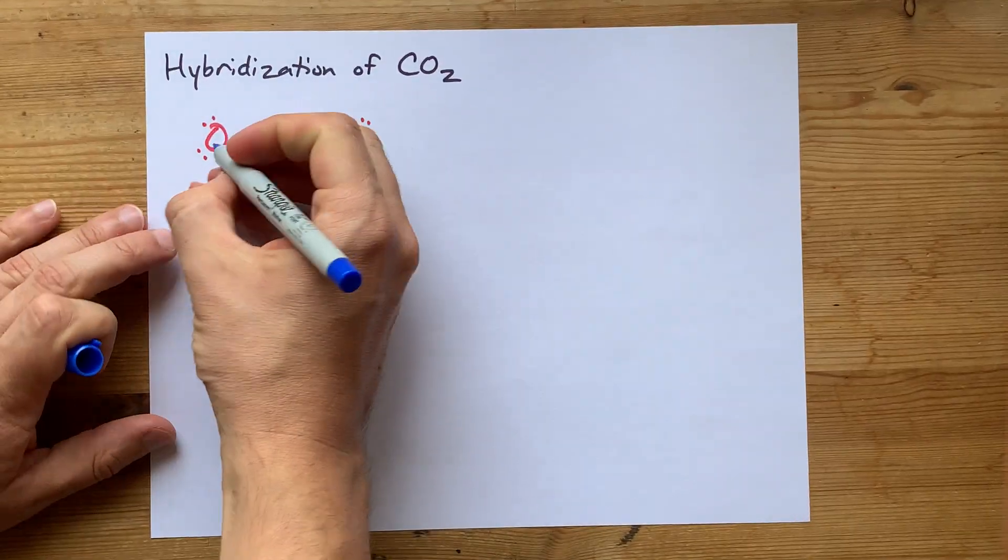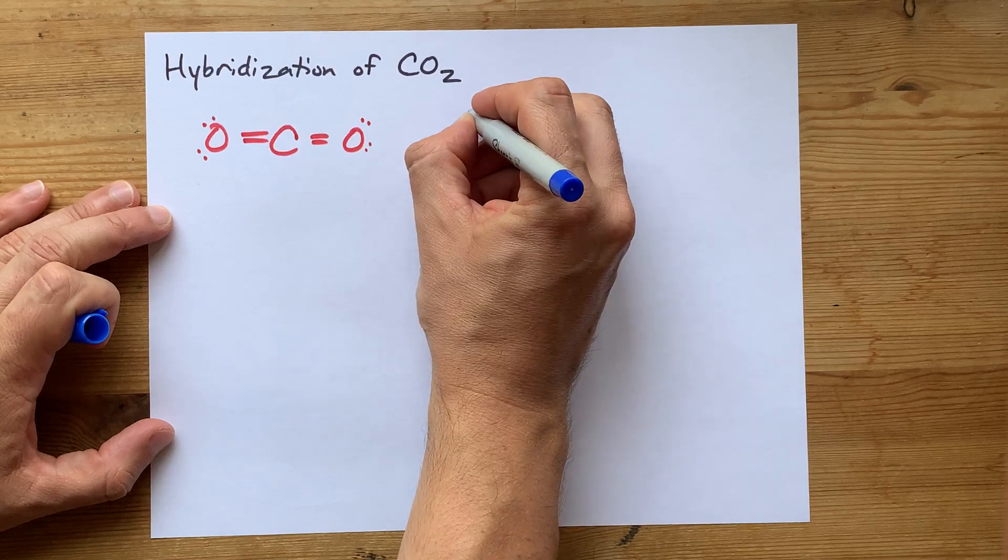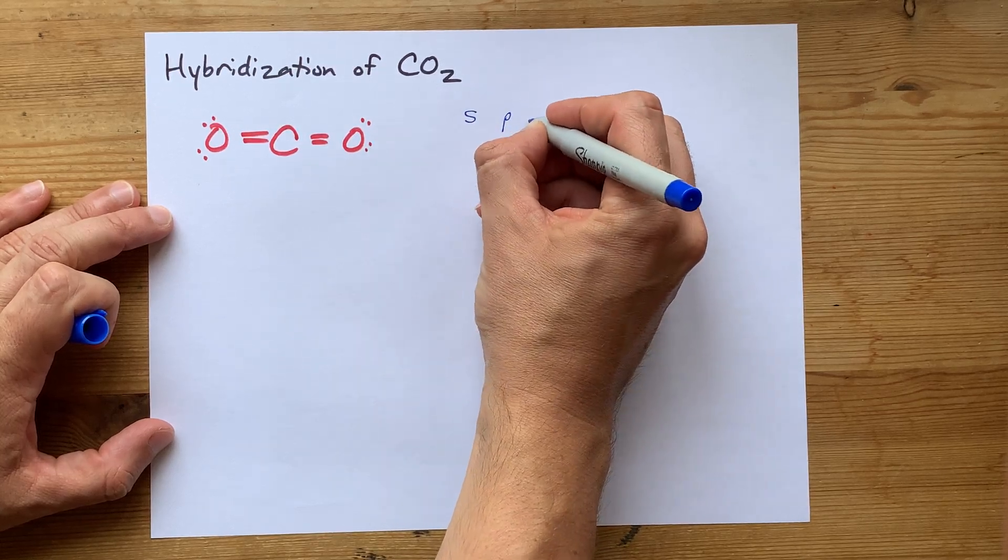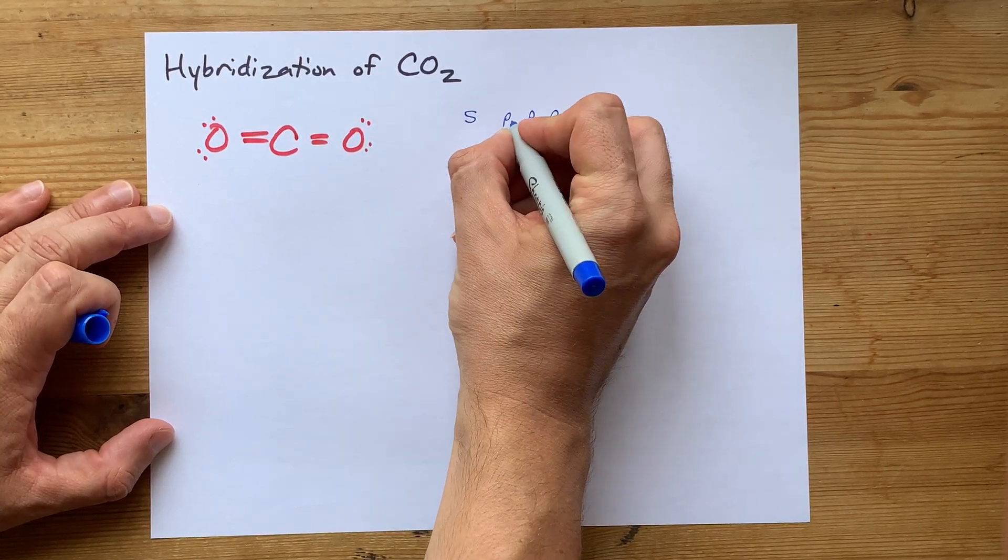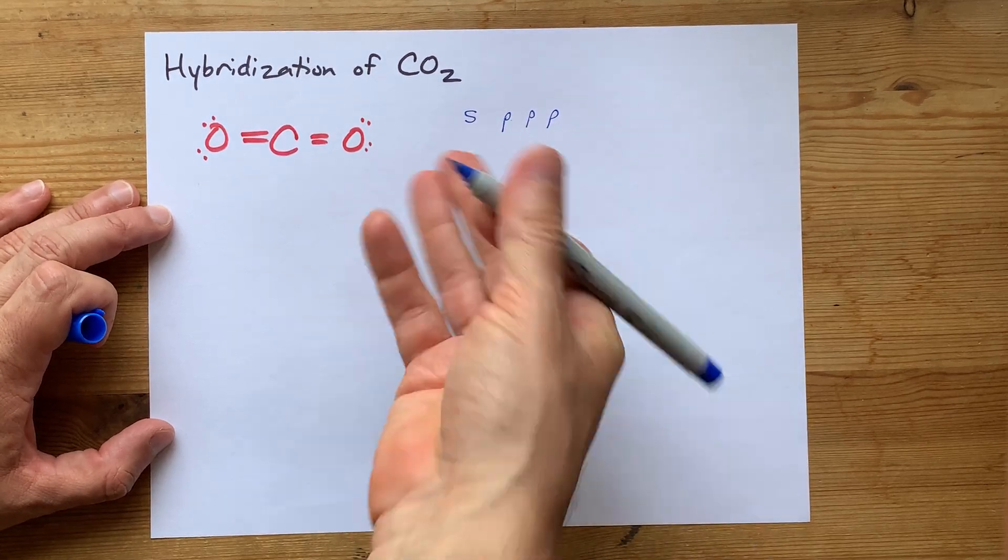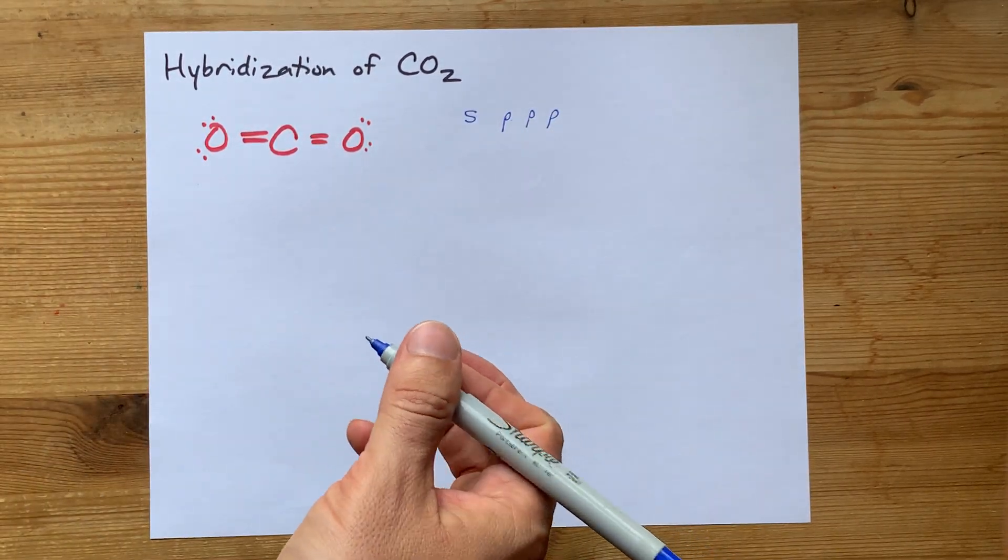Now, each of these atoms comes with an S orbital and then three P orbitals. Some people call them PX, PY, and PZ, but let's just agree that there's three of them.